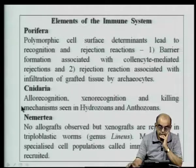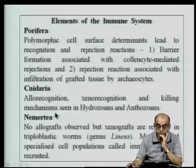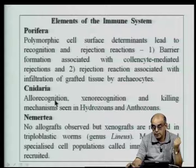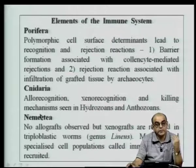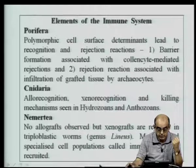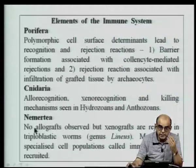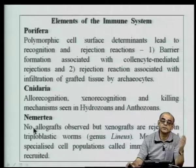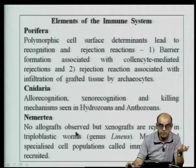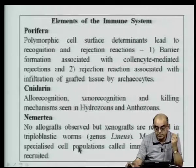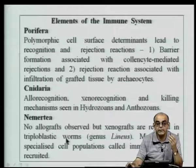Cnidaria have allo-recognition and xeno-recognition, with killing mechanisms similar to cytotoxic killer cells in higher mammals, seen in hydrozoans and anthozoans. The allo-rejection phenomenon and graft rejection or acceptance is not uniformly seen in all members of a phylum or class. Some do not reject allografts but reject xenografts, the mechanism for which has not yet been worked out due to the obvious difficulties in studying such organisms.